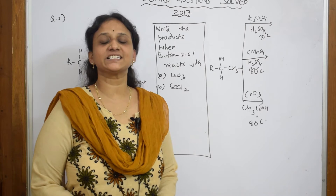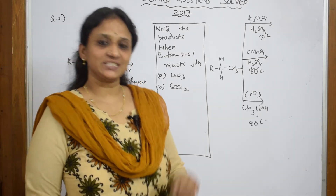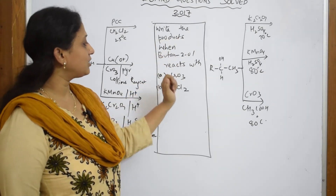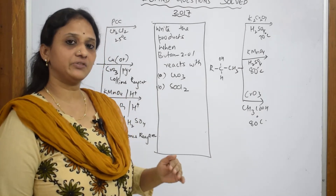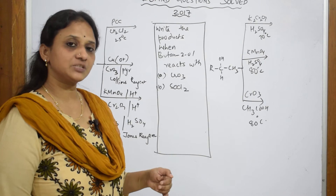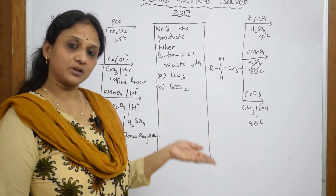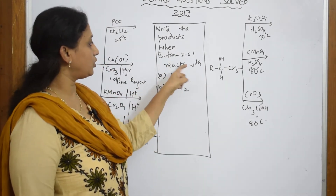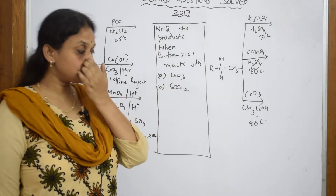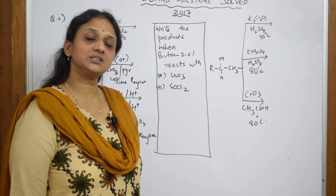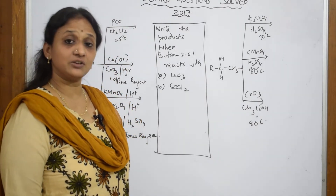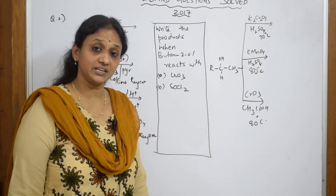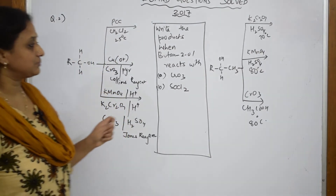Let us come back and see one more question from 2016-17. The question says: write the products or expected products when butan-2-ol reacts with these two reagents. As soon as a reagent is given to you, you should know whether it is an oxidizing agent, reducing agent, hydrogenating agent, dehydrating agent, or dehydrogenation agent — there are many different reagents you should remember.